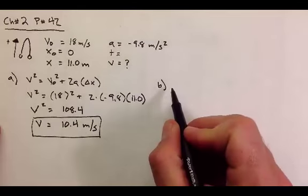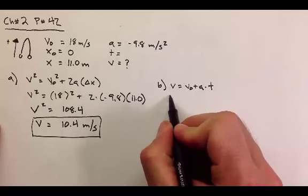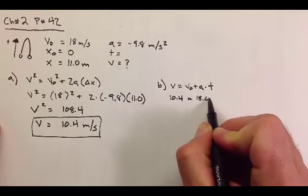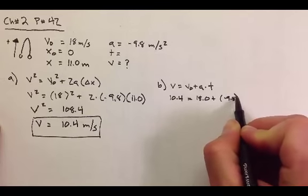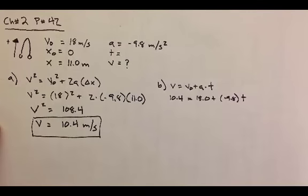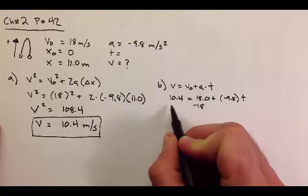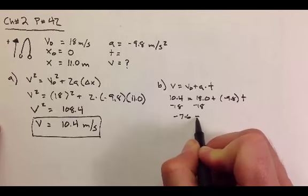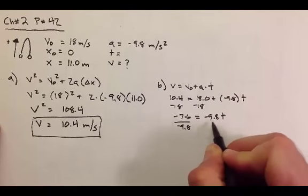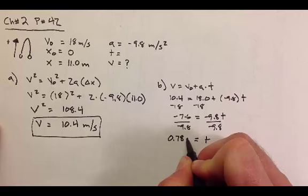How about I use equation number 1? V equals V naught plus A times T. And if I plug in 10.4 equals 18.0 plus negative 9.8 times T. This is a plus sign. That's the letter T. I could go ahead and solve this for T. And I would get subtract 18. Subtract 18. Negative 7.6 equals negative 9.8 T. Divide by negative 9.8. And I get T is equal to 0.78 seconds.